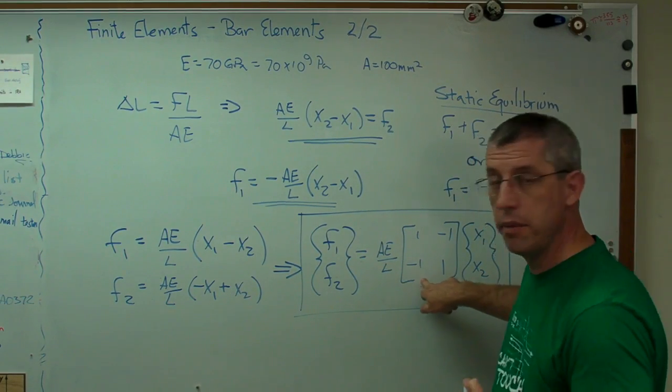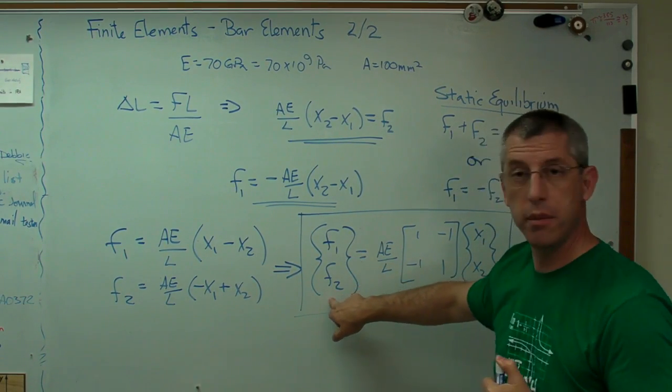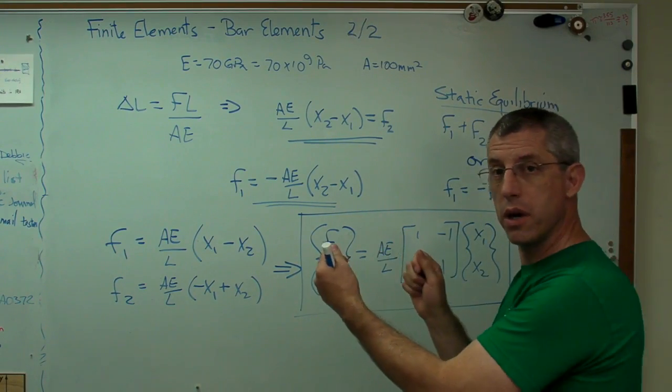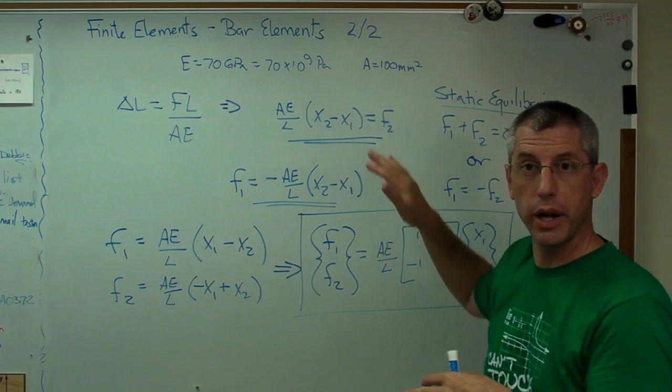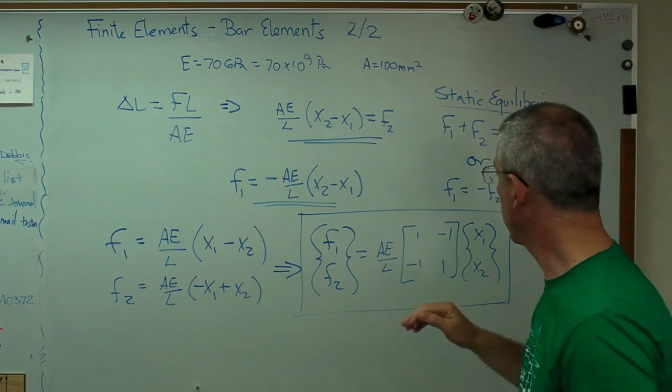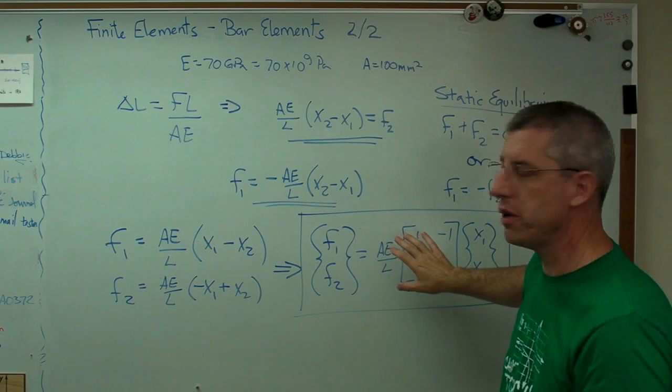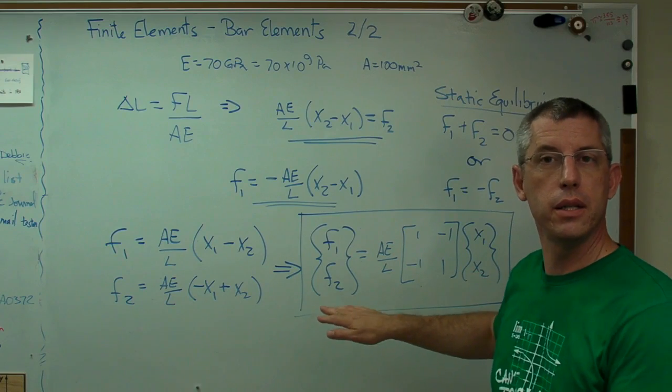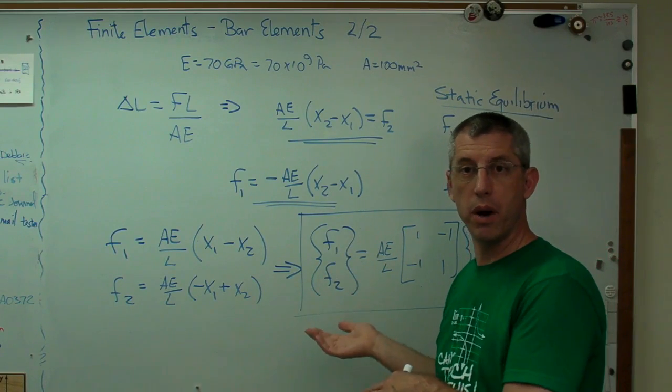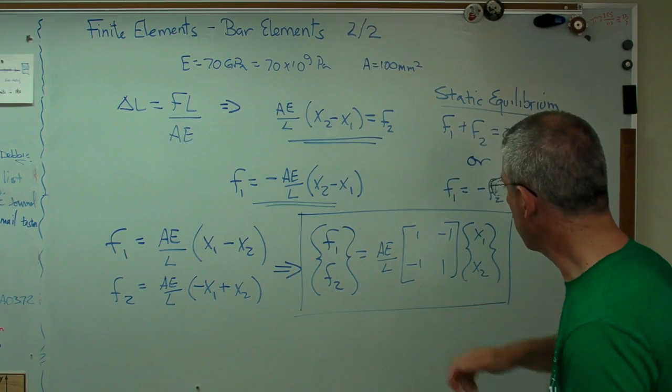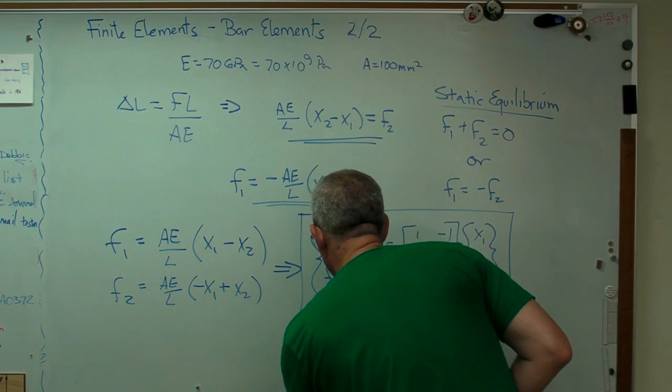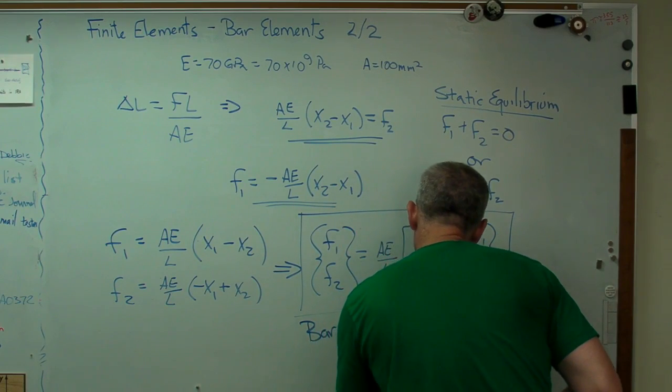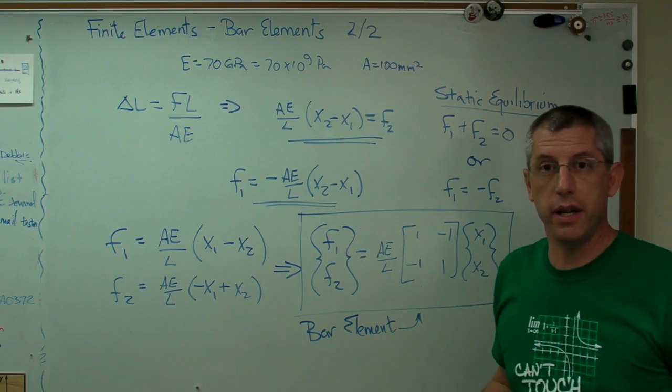Now, this is called the element stiffness matrix, the element force vector and the element displacement vector. This is assuming the element's horizontal. The reason I drew the problem earlier like I did is to keep everything horizontal. Next video I'll show you what to do if they're not horizontal, but that doesn't matter right now. That's just a coordinate transformation. So this is a bar element. That's the mathematical description. That's a finite element.